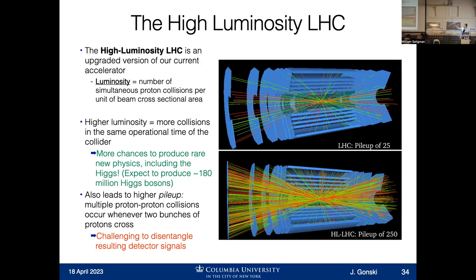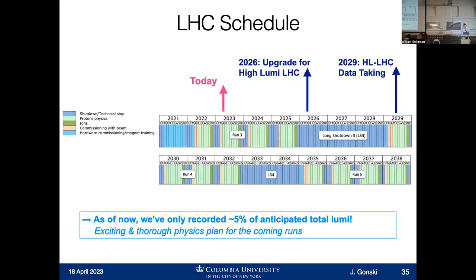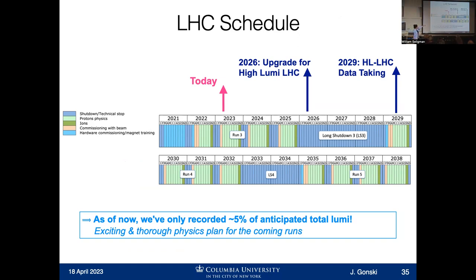The LHC is a long and complex and large project. To orient you in terms of where we're headed with this upgrade, I'll show you the current schedule of the Large Hadron Collider. Here we are today in April of 2023 — we've just started run three of the LHC, so we are taking data right now. Throughout the timeline there are blue periods where we have long shutdowns: we turn the machine off and reinstall different detector components and upgrade things.